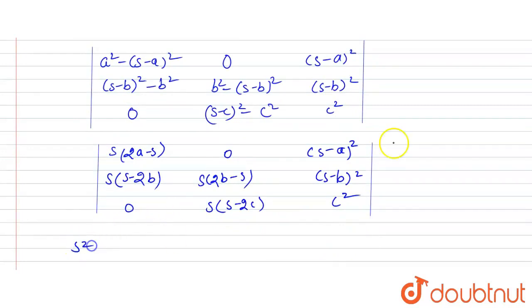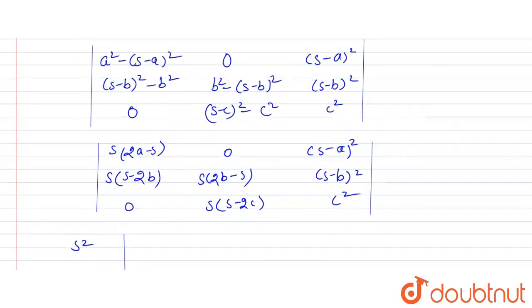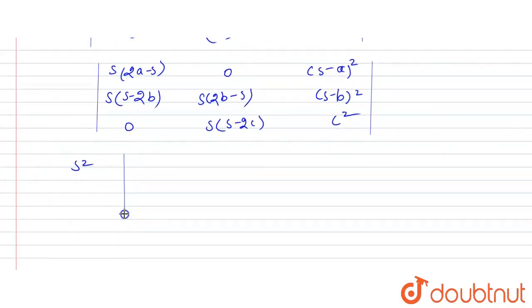we will take s squared common. Now we will take s squared. So from here, what we will get is: 2a minus s, s minus 2b, zero.